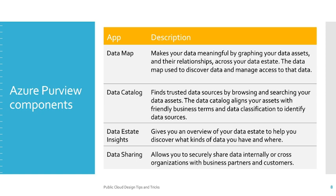The data catalog finds trusted data sources by browsing and searching your data assets. It aligns your assets with friendly business terms and data classification to identify data sources. Data estate insights gives you an overview of your data estate to help you discover what kinds of data you have and where exactly it is currently stored. The last component is data sharing, which allows you to securely share data internally or across organizations with business partners and customers — both within your organization and outside it.